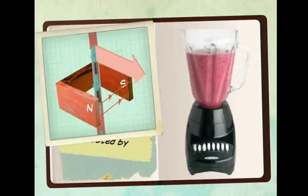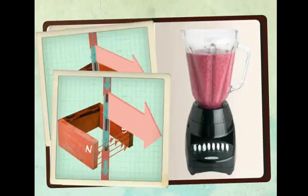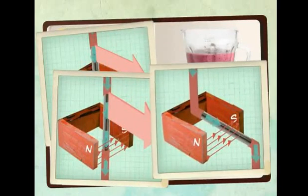So now I know that a current carrying wire in a magnetic field experiences a force. That the force depends on the strength of the magnetic field and the current. And that the force decreases to zero if the wire is parallel to the magnetic field.